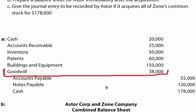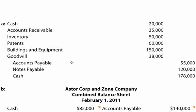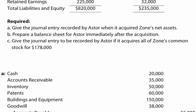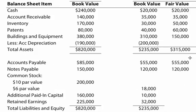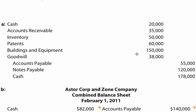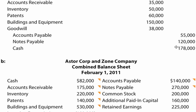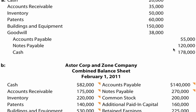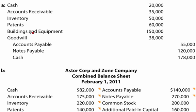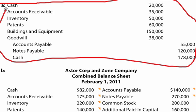Goodwill is $38,000. Then you have the net liabilities: accounts payable and notes payable of $55,000 and $120,000. Those are the same amounts as shown. Then the cash paid of $178,000 completes the entry. That is the whole journal entry for requirement A.